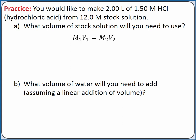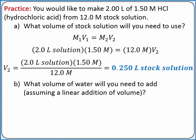First, we'll calculate the volume of stock solution using M1V1 equals M2V2. We'll assign the dilute solution to M1V1 and the concentrated stock solution to M2V2. We're solving for the volume of concentrated stock solution. Rearranging our equation and adding our numbers, we'll need 0.25 liters of concentrated stock solution.